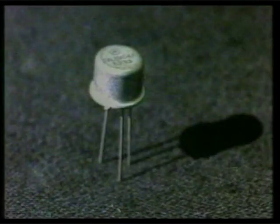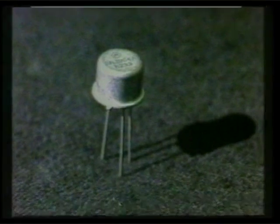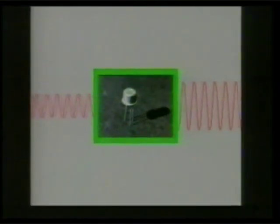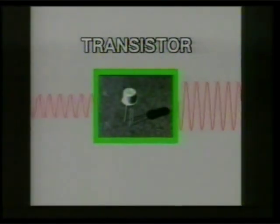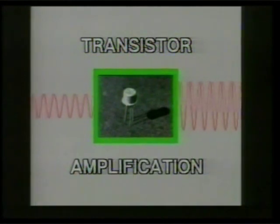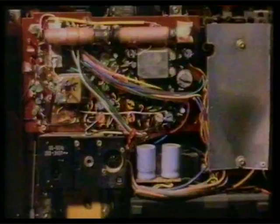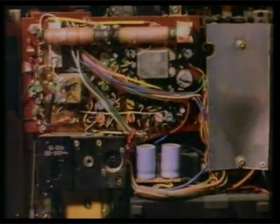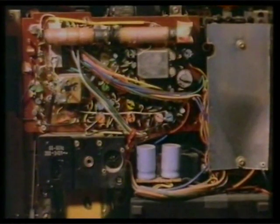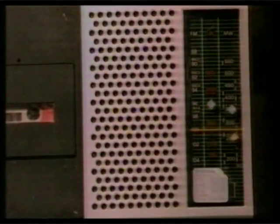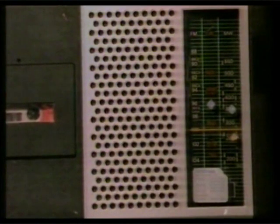But then along came the transistor. Transistors were faster and more reliable. The biggest use of early transistors was as amplifiers. Amplifiers change the size of the electrical signals. Amplifiers are the basis of many electrical devices, especially things like radios.